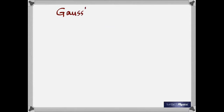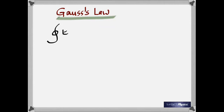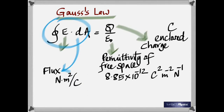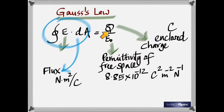Now we're going to use this concept to understand Gauss's law. Gauss's law states — and you read this as a closed integral, meaning when you integrate over a surface you start from a point and go back to it — the closed integral of E dot dA equals Q by ε₀. On the left-hand side is the total electric flux. On the right-hand side is the enclosed charge divided by epsilon naught.